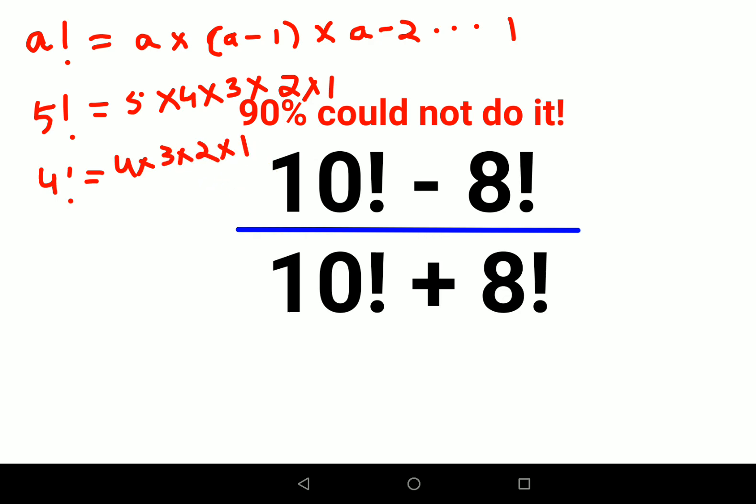Now if you look closely, you will see this part is completely common to both of these factorials. So I can very well write 5 factorial in terms of 5 into 4 factorial.